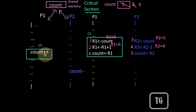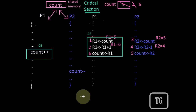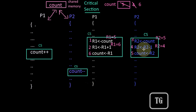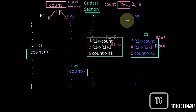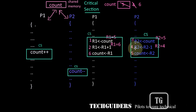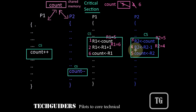This portion of program or this piece of code is a critical section for the process P1. Similarly, this portion of program is a critical section for the process P2, and the problem of race condition occurs when more than one such process is executing in its critical section at the same time.